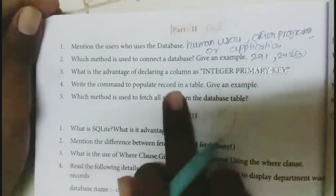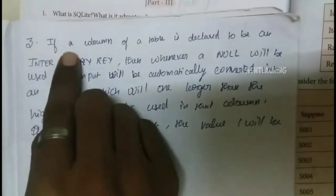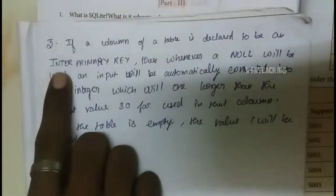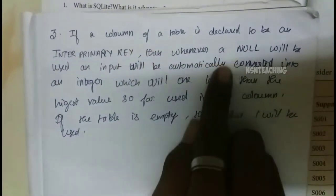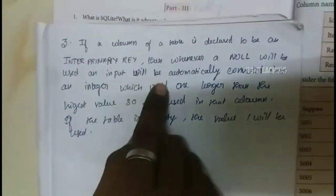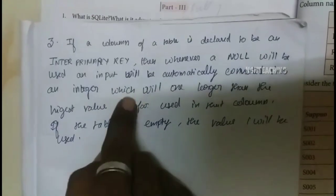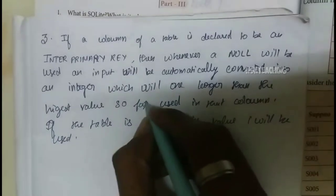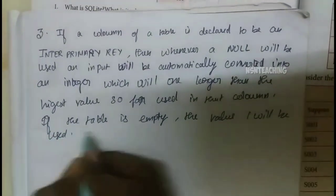What is the advantage of declaring a column as integer primary key? If a column of a table is declared to be an integer primary key, then whenever a null value is inserted, it will be automatically converted into an integer which will be one larger than the highest value so far used in that column.